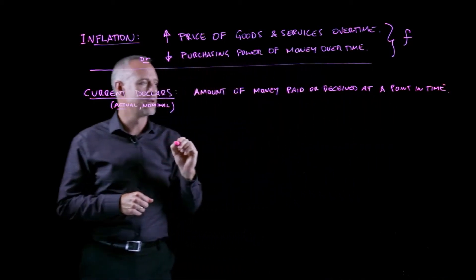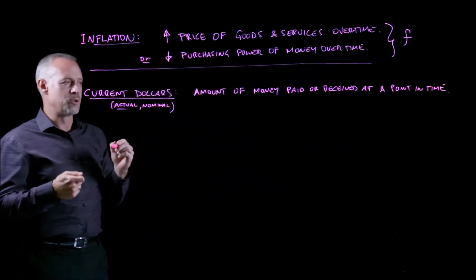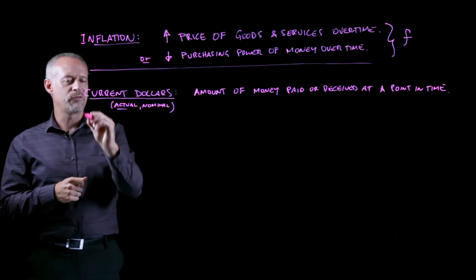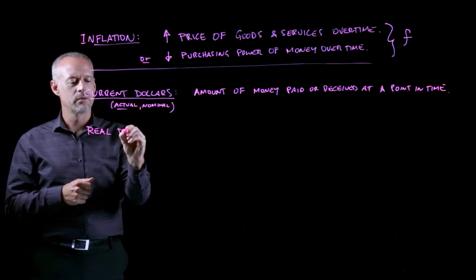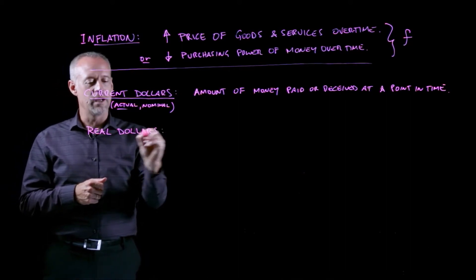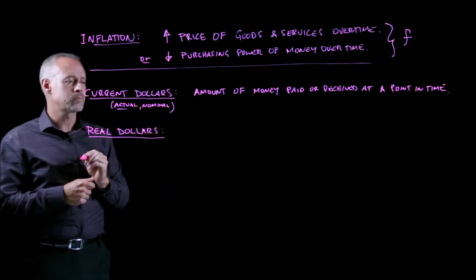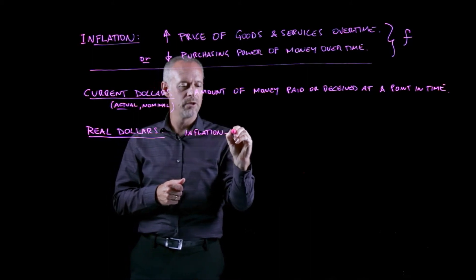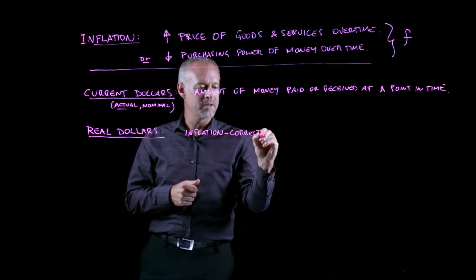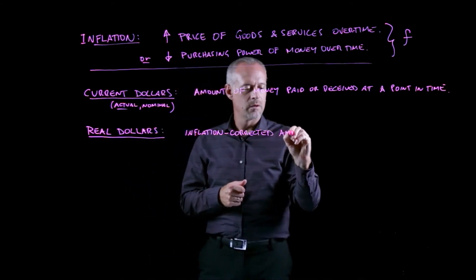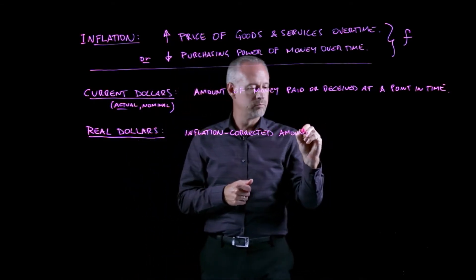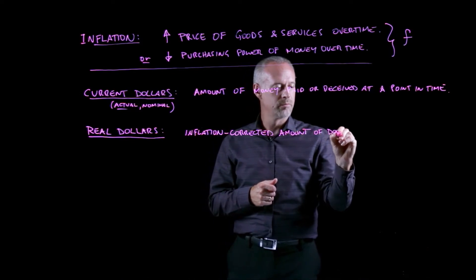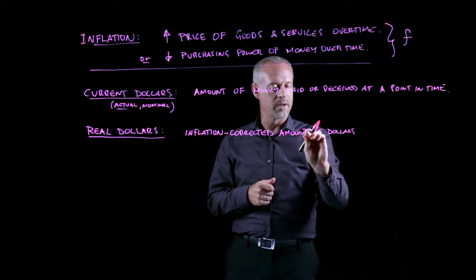Like I said, you can think of that as the actual dollar bills that come in to your wallet or go out of your wallet. In contrast, we'll define something else called real dollars. And real dollars are really the inflation-corrected amount of dollars. That's how I like to think of it.